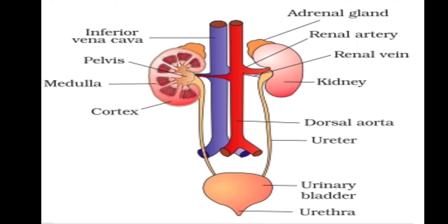Draw this diagram in your notebook and label these parts: kidneys, renal artery, renal vein, ureter, urinary bladder, and urethra. Kidneys are reddish-brown, bean-shaped structures located in the abdomen, one on either side of the backbone. Kidneys contain millions of nephrons which filter the blood. Urine formed in the kidneys is carried by ureters to the urinary bladder, a muscular organ that temporarily stores urine. Urethra is the opening through which urine exits the body.